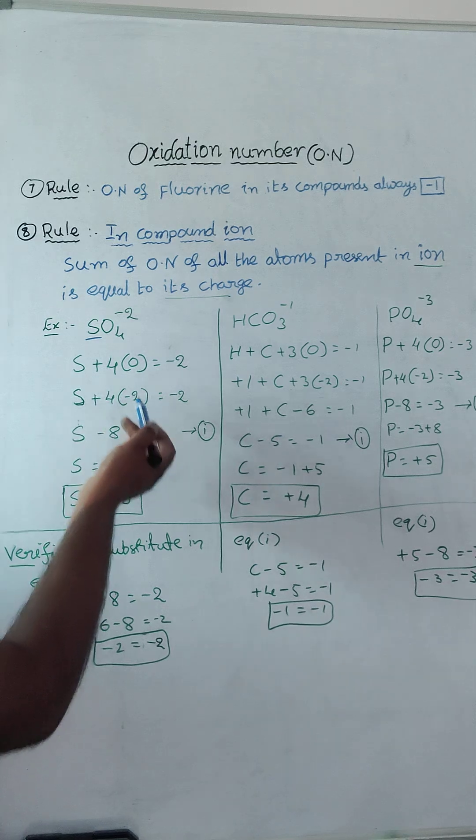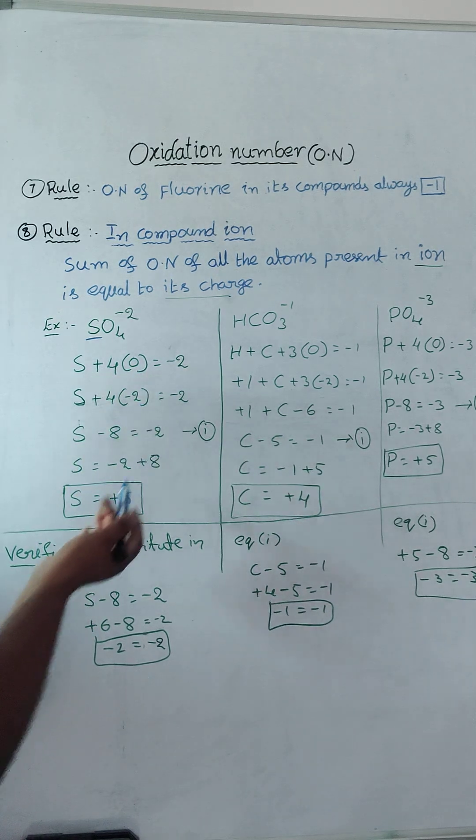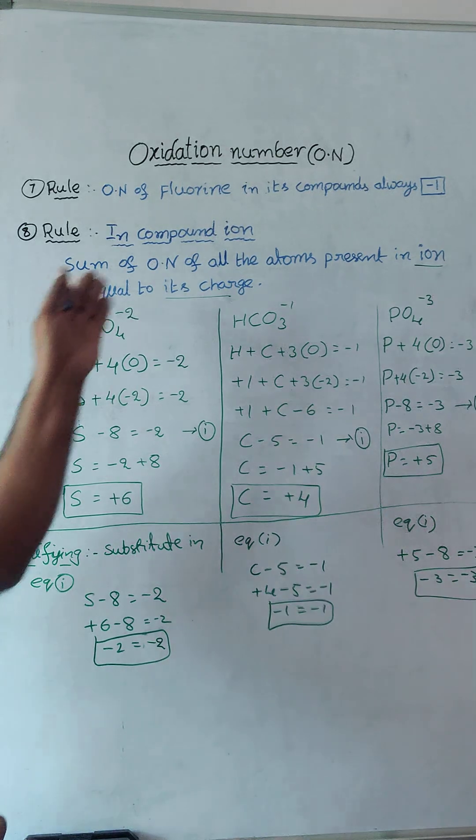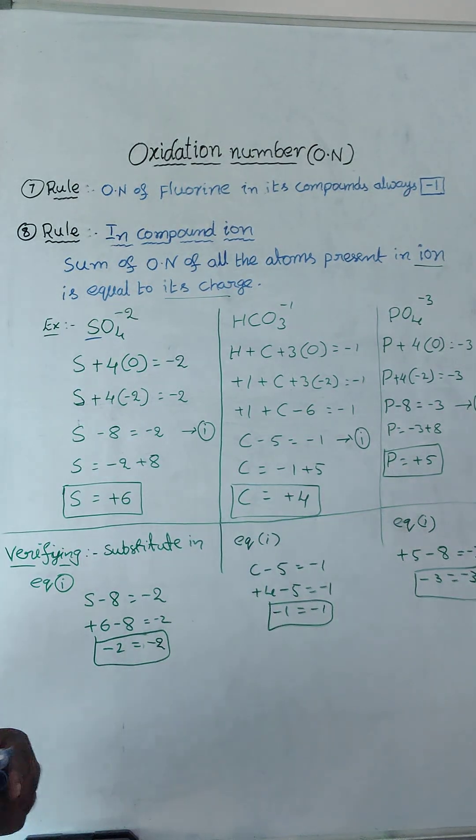For oxygen is 4 into oxygen oxidation number minus 2. Solving this equation, you will get plus 6. To verify, really as per this, correct, is equal to its charge.